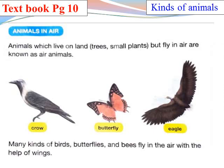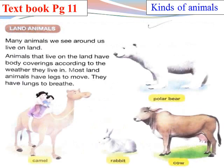Animals in air: animals which live on land or trees but fly in the air are known as air animals. In this picture, there is a crow, a butterfly, and an eagle. Many kinds of birds, butterflies, and bees fly in the air with the help of wings.